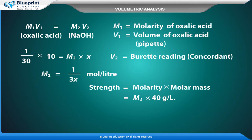1 by 30 into 10 is equal to M2 into x. V2 is equal to burette reading concordant. M2 is equal to 1 by 3x mole per litre.